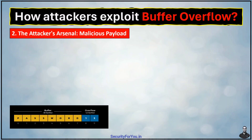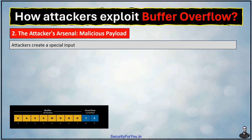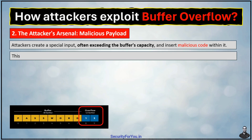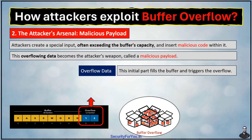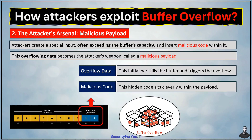The second step is the attacker's arsenal — the malicious payload. They create a special input, often exceeding the buffer's capacity, and insert malicious code within it. This overflowing data becomes the attacker's weapon called a malicious payload. It's like stuffing the box with extra apples and adding a hidden knife in that mix. The payload often contains two key components: overflow data, which fills the buffer and triggers the overflow like filling the box with enough apples to reach the top; and malicious code, the hidden code that sits within the payload like a knife concealed among the apples.